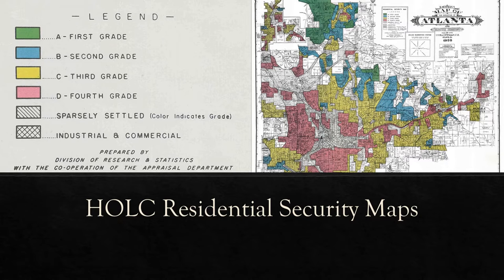The Homeowners Loan Corporation developed four categories for neighborhoods: Type A Best, Type B Still Desirable, Type C Definitely Declining, and Type D Hazardous. The Type D neighborhoods were considered too risky for investment, with property values almost starting to drop. These areas included most of the Black residents, blocking their access to mortgages and keeping them in declining communities.